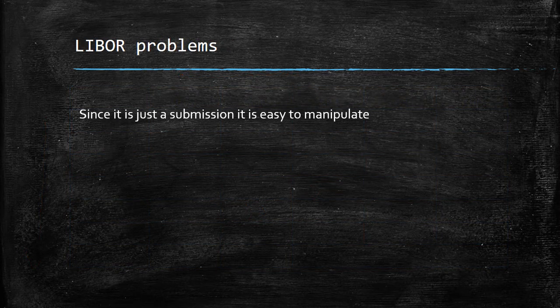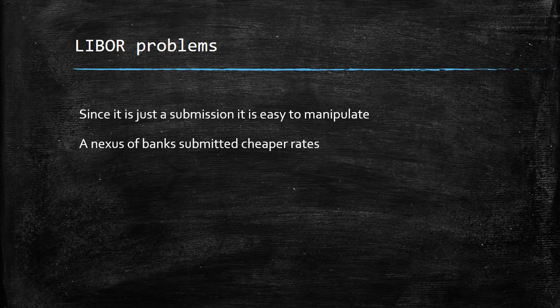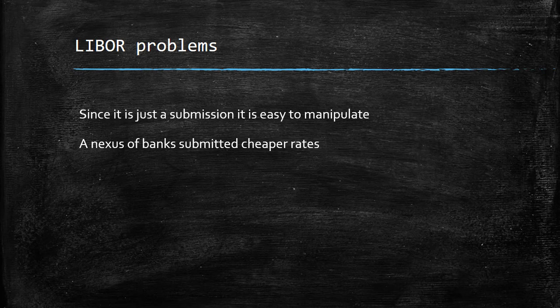The most important problem with LIBOR is that it is just a submission — nobody has actually done a transaction. It is simply their idea of what they think they would borrow, which is judgmental and prone to genuine mistakes. More critically, in 2012 a massive fraud broke out involving a group of banks that manipulated the rates for their own advantage. The core problem is that there is no underlying transaction on which the rates are based. This caused a significant loss of trust in the financial system and led to an outcry, resulting in new replacement rates — SOFR for USD, SONIA for GBP, and so on.